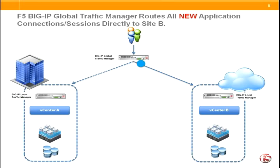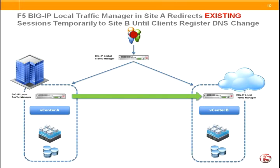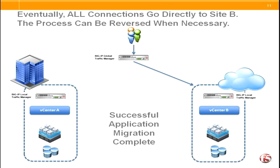Once this happens, new connections and new users into the application get directly routed to site 2 as expected. However, users that were already accessing the site and already have active sessions will still be hitting site 1. In this interim period during the transition, those user connections will be seamlessly rerouted through the tunnel from site 1 to site 2. This is a transition period and will only happen while those active user sessions are alive. Eventually those sessions will end and we will only have new users accessing the application through data center 2.